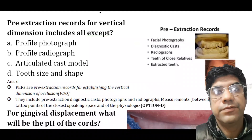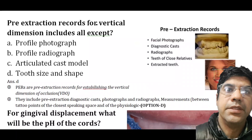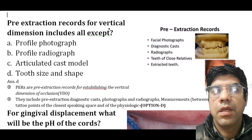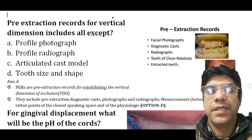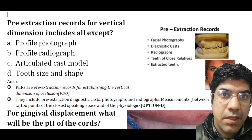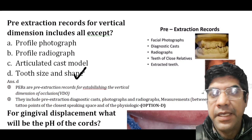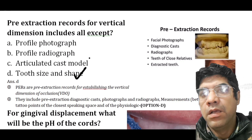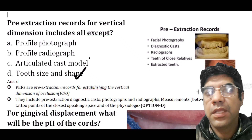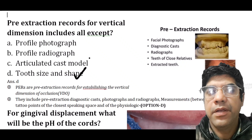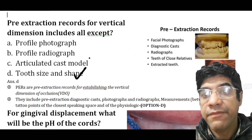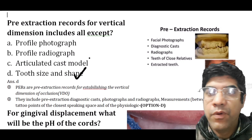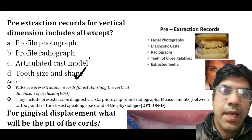The pre-extraction record for vertical dimension includes all except tooth size and shape. These records are important to determine the appropriate vertical dimension of the occlusion before dental extraction.